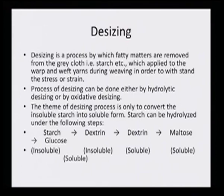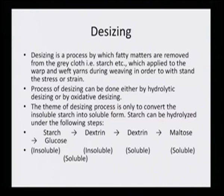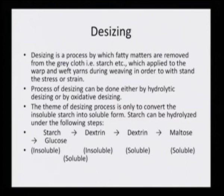The process of desizing can be done either by hydrolytic desizing or by oxidative desizing — one or the other is used, not both. The theme of the desizing process is only to convert insoluble starch into soluble form. If starch is not removed from the fabric, it will create more dye aggregates to settle in one place and will affect the dye absorbency.